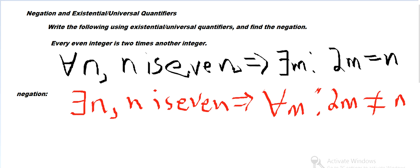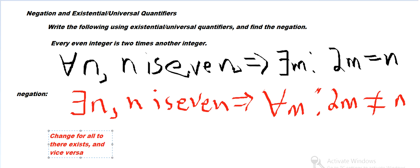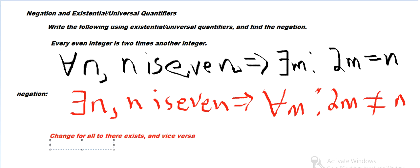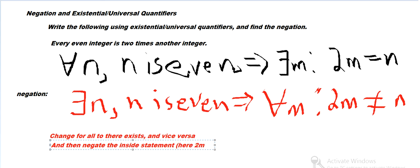Quick summary: we change 'for all' to 'there exists' and vice versa — change all the 'for alls' to 'there exists' and 'there exists' to 'for alls' — and then negate the inside statement, so 2m equals n becomes 2m does not equal n.